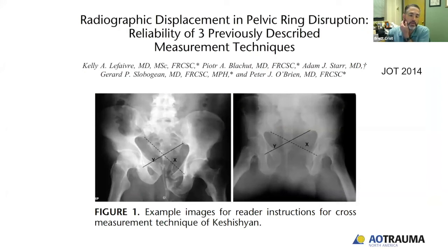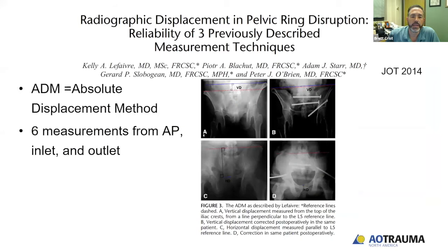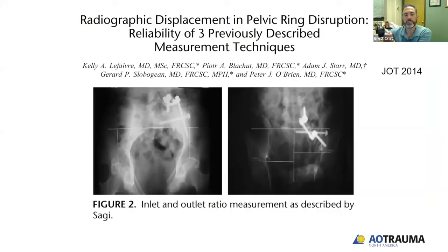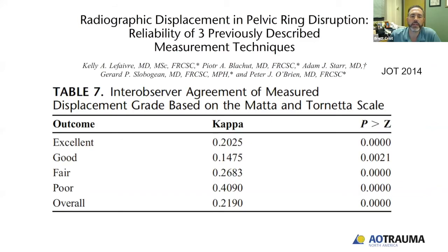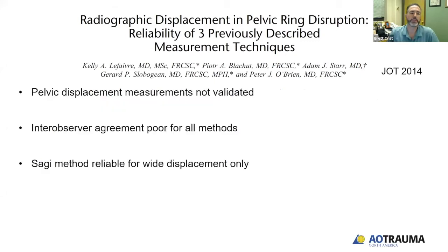This is another paper from a group from Vancouver that looked at three common ways of measuring pelvic displacement recorded in the literature. One method is called the absolute displacement method, which requires six measurements on three plain films — AP, inlet, and outlet views. They also looked at the inlet and outlet ratio measurement that Cloud Saji described, and the reduction evaluation that Mata and Tornetta published. Their conclusion was that pelvic displacement measurements have not been validated, with poor inter-observer agreement for all methods. They concluded the Saji method was reliable for wide displacement only.